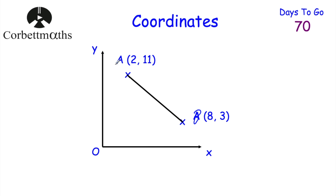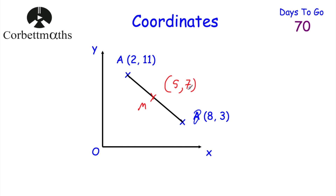This time we've got points A at two, eleven and B at eight, three, and we need to find the midpoint of line AB — pause the video and have a go. We have no scale on the grid, so we use the formula: two plus eight equals ten, halved is five. Eleven plus three equals fourteen, halved is seven. So the coordinates of the midpoint M are five, seven.